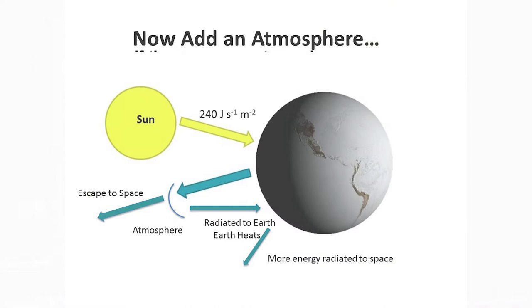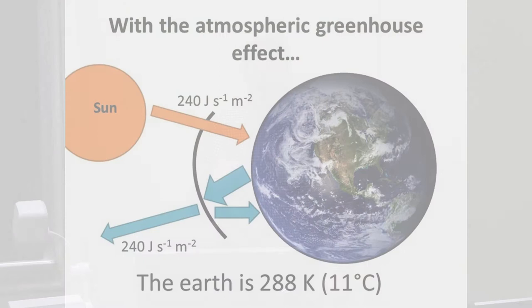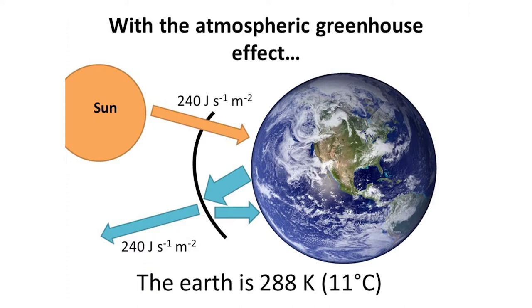Now what happens if we add an atmosphere? The same amount of energy comes in from the Sun. The Earth emits some as infrared light and reflects some. Some energy is trapped by the atmosphere; some escapes to space. But some energy is emitted from the Earth's atmosphere back to the surface. So now the surface absorbs not only 240 watts per meter squared from the Sun but also additional energy radiated back from the atmosphere. The net result is a greenhouse effect where the Earth is now warmer than it would be without an atmosphere. The problem is that we are adding CO2 to the atmosphere so that the Earth is heating up.